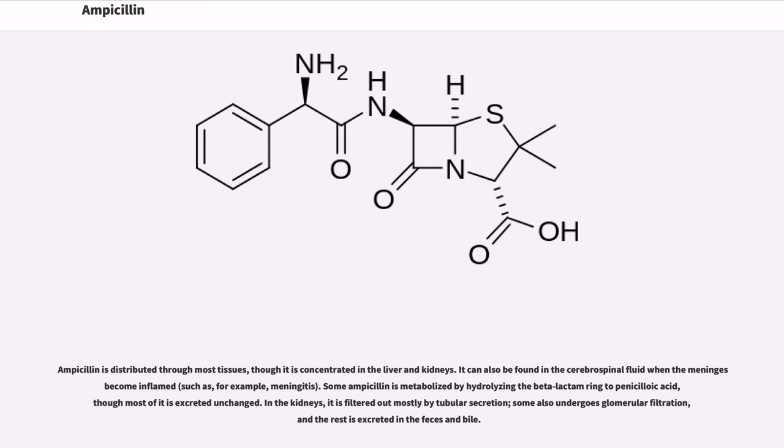Some ampicillin is metabolized by hydrolyzing the beta-lactam ring to penicilloic acid, though most of it is excreted unchanged. In the kidneys, it is filtered out mostly by tubular secretion, some also undergoes glomerular filtration, and the rest is excreted in the feces and bile.